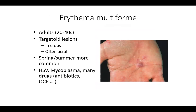Erythema multiforme is a classic entity. Clinically, you have target-shaped papules and macules, usually in adults aged 20 to 40, though any age can be affected. Targetoid lesions occur in crops, often on acral surfaces, and spring and summer are more common. It's associated with herpes simplex virus, mycoplasma, pneumonia infections, and many drugs including antibiotics and oral contraceptive pills. A biopsy to confirm interface dermatitis can be very helpful when the clinical presentation is not fully classic.